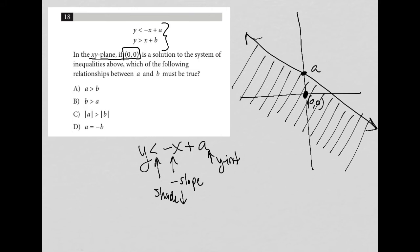My next inequality says that y is greater than x plus b. So in this case, I have a positive slope. I am shading up. And b is my y-intercept. So again, if I'm going to shade up and capture (0,0) as a solution,